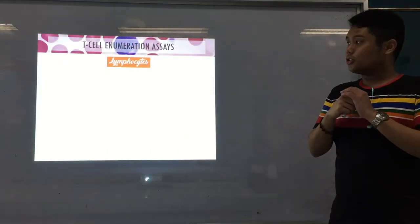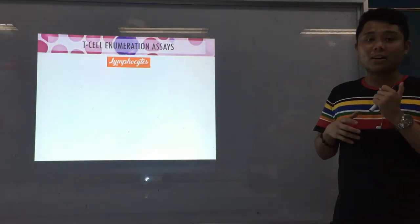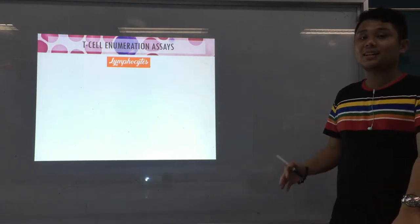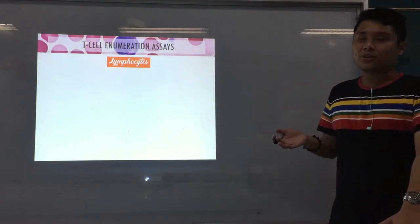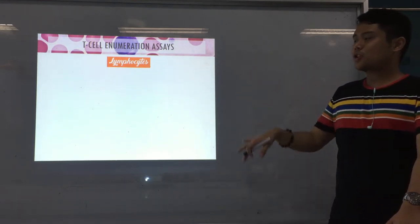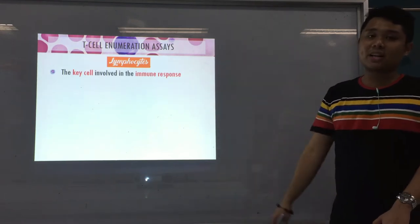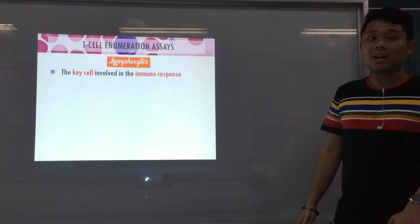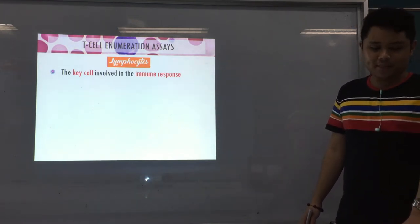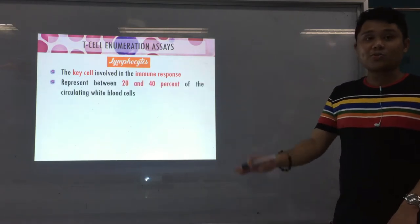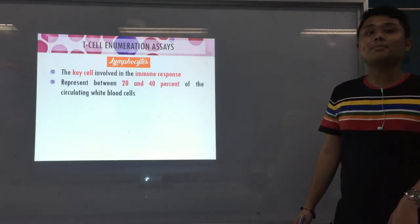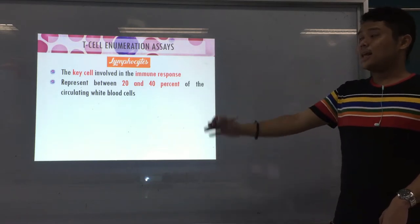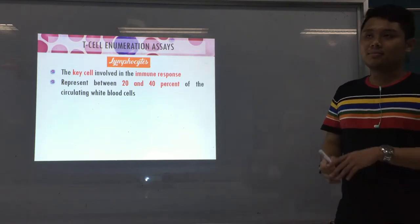Before we go to that, just a little background. Lymphocytes — your T-cells are a type of lymphocyte. Just a brief description: lymphocytes are the key cells involved in the immune response. As mentioned, 20 to 40% of the circulating white blood cells in our body are lymphocytes.